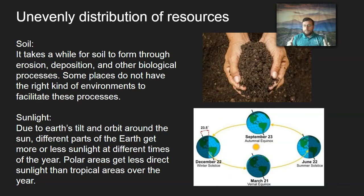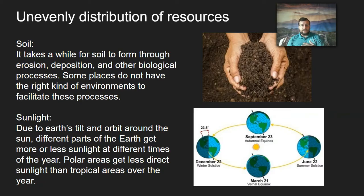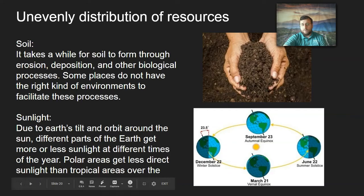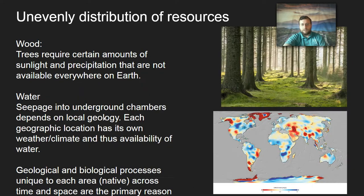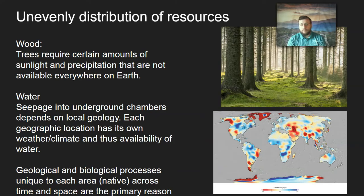Sunlight, even though it's an inexhaustible resource, is unevenly distributed. If you live at the poles, for six months you'll have light and six months you'll have darkness. If you live in the tropics, it will be warm all throughout the year. There are seasons too, so different places have more light at different times of the year — and that causes differences in the availability of resources and ecosystem productivity due to Earth's tilt and rotation around the sun. Wood also varies by place because it requires different amounts of sunlight, precipitation, and nutrients. Not everywhere in the world has forests — many places have grasslands or deserts that can't support trees.